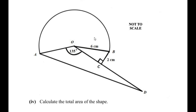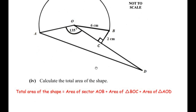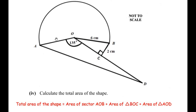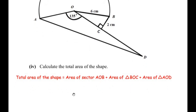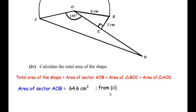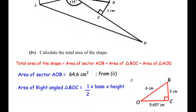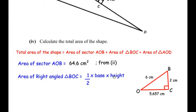The fourth sub-question asks us to calculate the total area of the shape. This shape is made up of sector AOB, right-angle triangle BOC, and triangle AOD. So the total area equals the area of sector AOB plus the area of triangle BOC plus the area of triangle AOD. The area of sector AOB was found in the second sub-question as 64.6 centimeters squared.